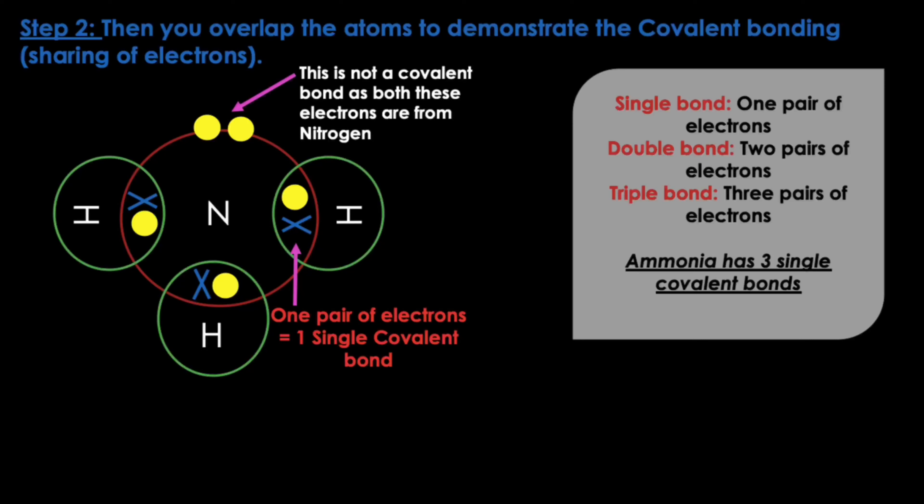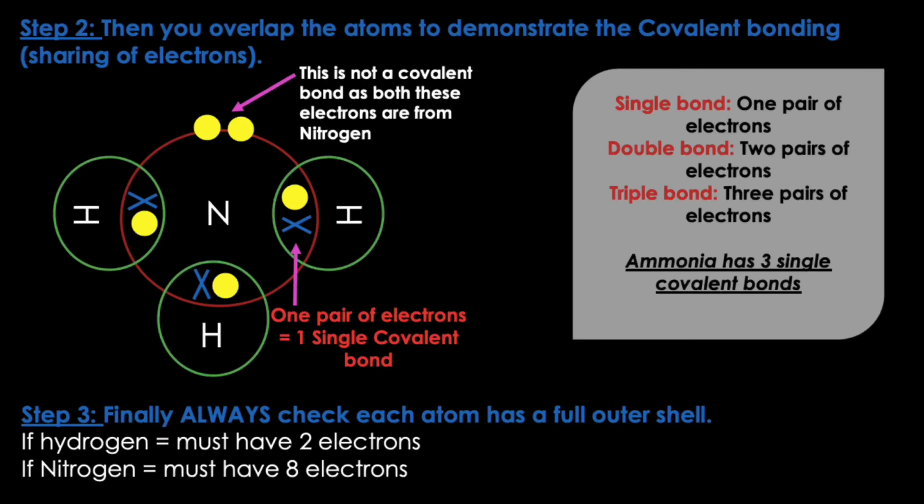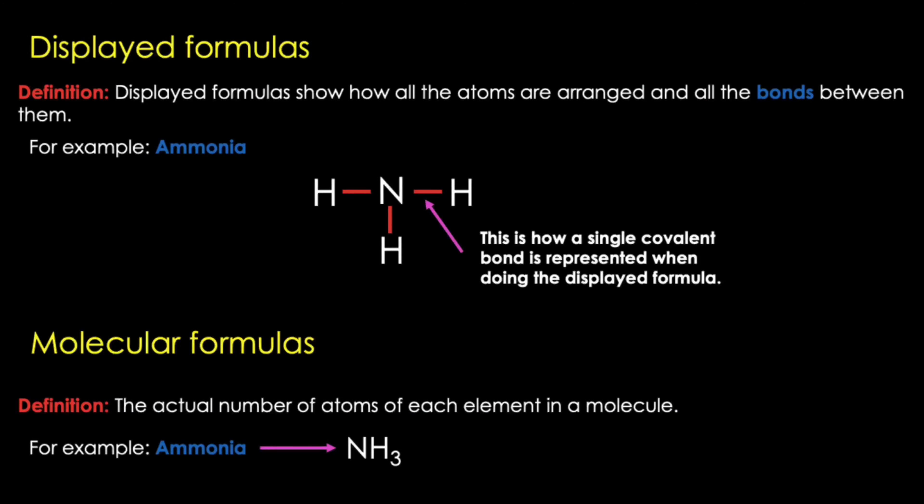The two yellow electrons shown have no covalent bonds taking place because both electrons are coming from nitrogen and there is no sharing with another atom. Step three: always check to see if each atom has a full outer shell. For hydrogen it should have two electrons on the outer shell, and for nitrogen it should have eight. Displayed formulas are another way covalent bonds can be represented. They show how all the atoms are arranged and all the bonds between them. Single bonds are represented as a single line, so for ammonia each line between nitrogen and hydrogen shows a single covalent bond — three single covalent bonds in total.